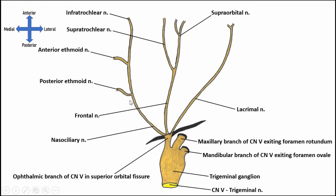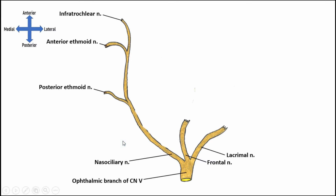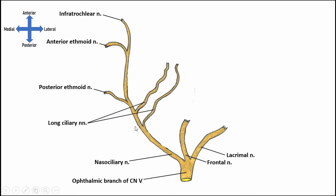That doesn't tell us much about the globe of the eye itself, so we're going to look at some branches of the nasociliary nerve in more detail. Here we've isolated the ophthalmic branch V1, with the lacrimal and frontal nerves cut away to give plenty of space. We can see the nasociliary nerve with its previously discussed branches — the anterior and posterior ethmoidal nerves and the infratrochlear nerve. Coming off the nasociliary, we have several long ciliary nerves traveling to the globe of the eye, which are sensory to the eye itself.